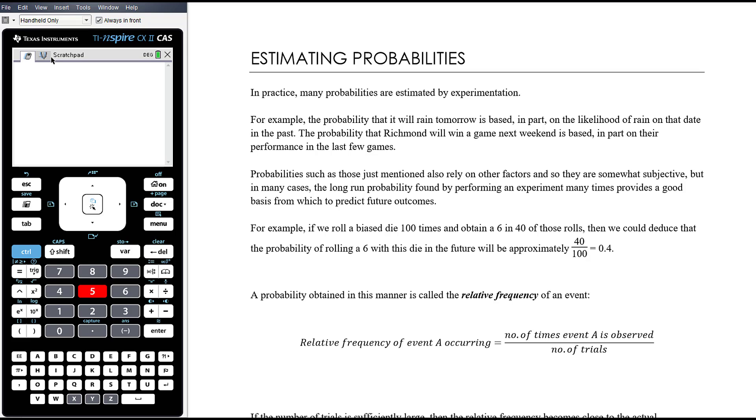So for example, if we were to roll a biased die, a not fair die where it's not equally likely to land on each side, if we roll that biased die 100 times and obtain a 6 in 40 of those rolls, then we could deduce that the probability of rolling a 6 with this die in the future will be approximately 40 out of 100 or 0.4.